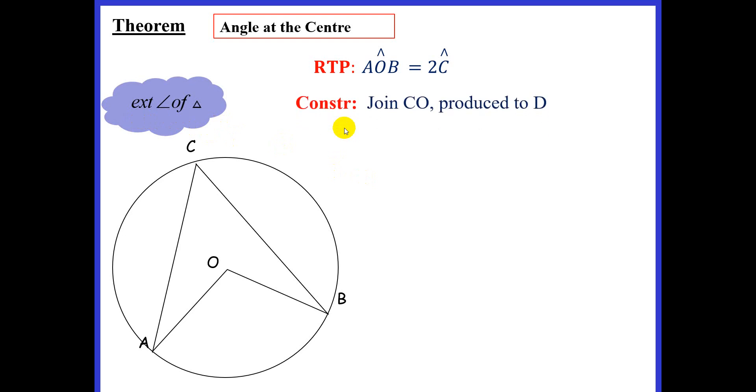To start off, we need a construction. Our construction is going to be to join CO and extend it beyond point O, and we can name this point D.